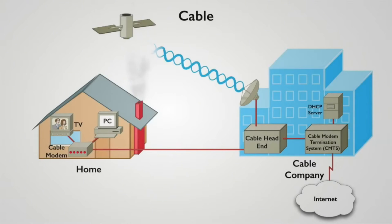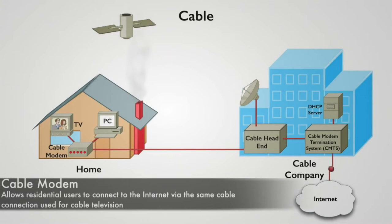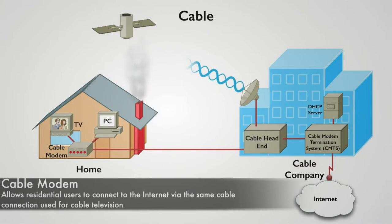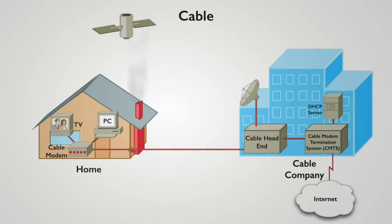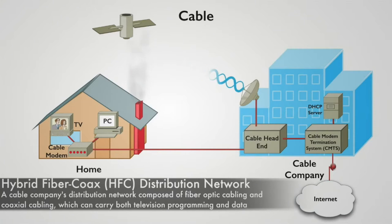One of the most popular technologies found in homes today for getting out to the internet — and maybe connecting back to our main office using something called a VPN or virtual private network — is a cable modem. A cable modem can use our television cable as the medium to get back to the internet. Many cable television companies today have a network composed of both fiber optics and coaxial cables, called a hybrid fiber coax distribution network, or HFC distribution network.